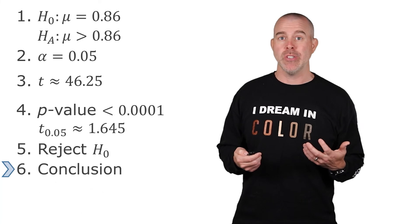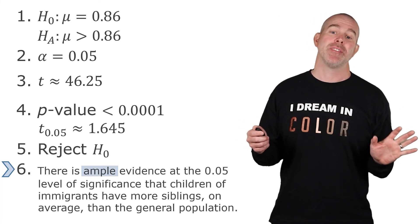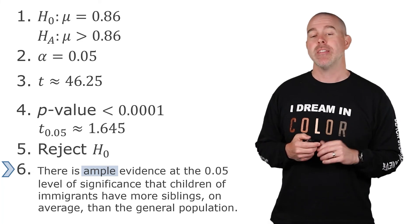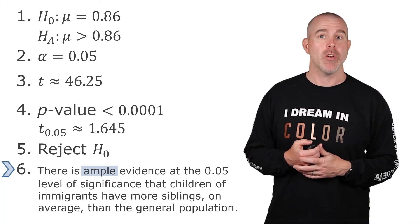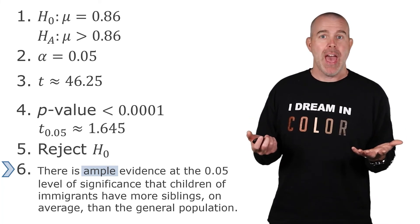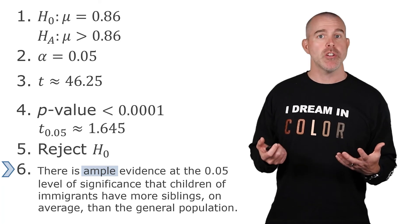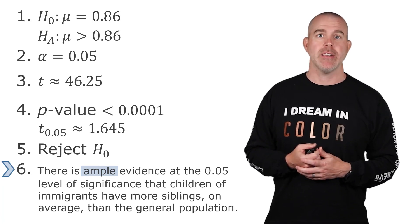And then when we make our conclusion, I even put here, there is ample evidence at the 0.05 level of significance that children of immigrants have more siblings on average than the general population. So, at least based on the database that we have here, it does look like immigrant families tend to be larger than those who are not immigrants.